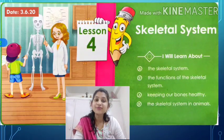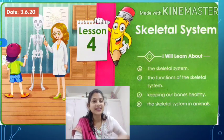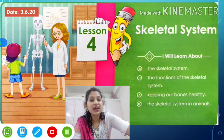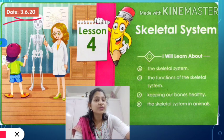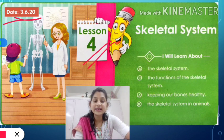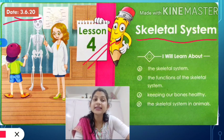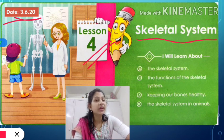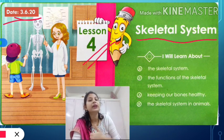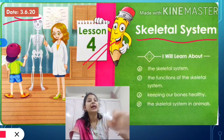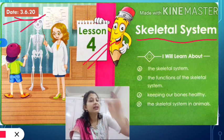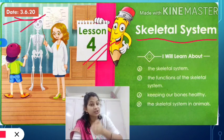Hello students, welcome to today's science class. Today is 3rd June and we are going to start a new lesson, lesson number 4. The name of the lesson is the skeletal system. This is the beginning of the chapter, so you have to write down the chapter number on the top and name of the chapter on the top of your copy. Write down today's date as well and do not forget to put margin.